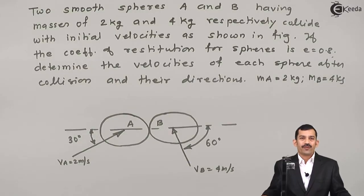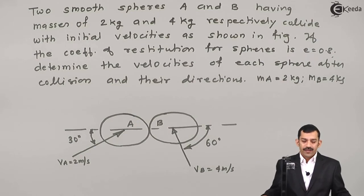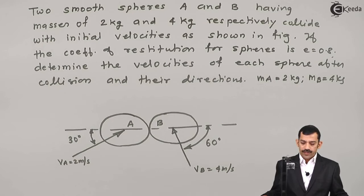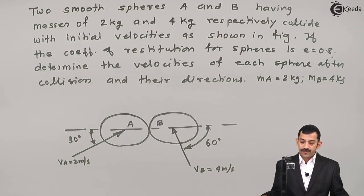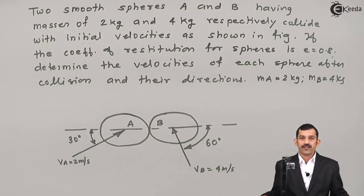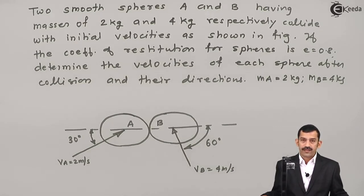Hi friends, we will solve a problem on kinetics of particles 3. Two smooth spheres A and B having masses of 2 kg and 4 kg respectively collide with initial velocities as shown in the figure. If the coefficient of restitution for the spheres is 0.8, determine the velocities of each sphere after collision and their directions.